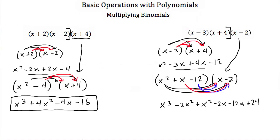Now we add like terms. There's no like term for x cubed, so that stays. Negative 2x squared plus x squared is negative x squared. Negative 2x minus 12x is negative 14x. And then plus 24. So the final answer is x cubed minus x squared minus 14x plus 24.